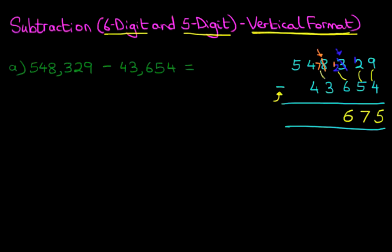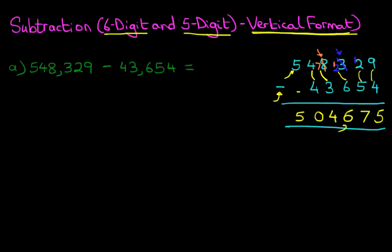On to the thousands, we've got 7 minus 3. The answer is 4. Now on to the ten thousands, we've got 4 minus 4. The same two numbers we're subtracting are the same, so the answer is 0. And this last digit — the hundred thousands — is subtracting 0, so this does not change. And we have arrived at our answer: it is 504,675.